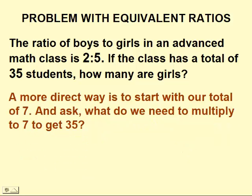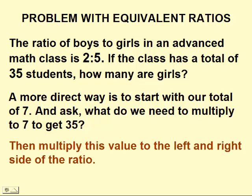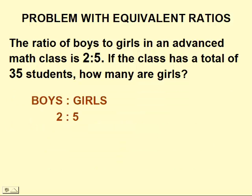A more direct way to solve this question is to start with our total of 7 and ask ourselves, what do we need to multiply 7 by to get 35? Then, multiply this value to the left and right side of our ratio. Once again, we'll start with our ratio of boys to girls, 2 to 5, giving us a total of 7.